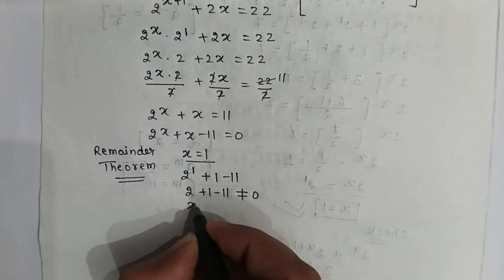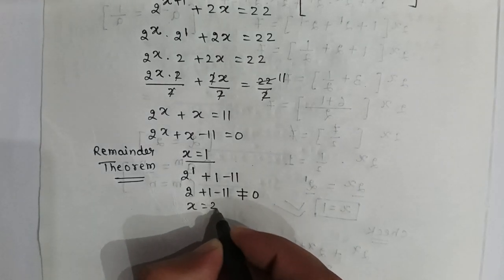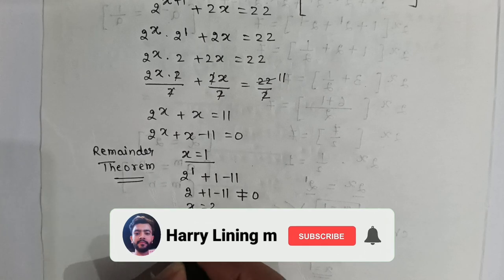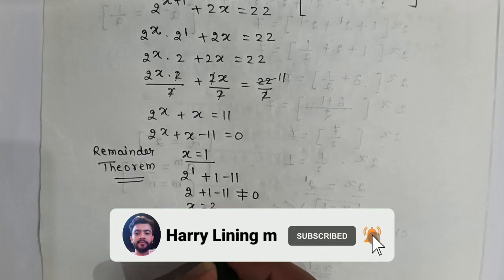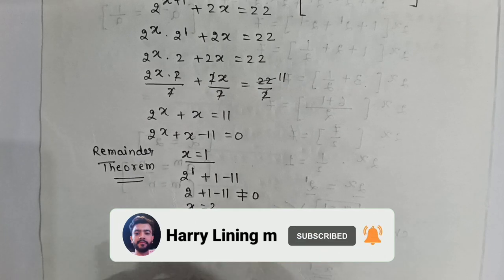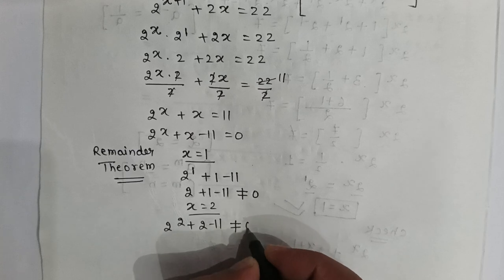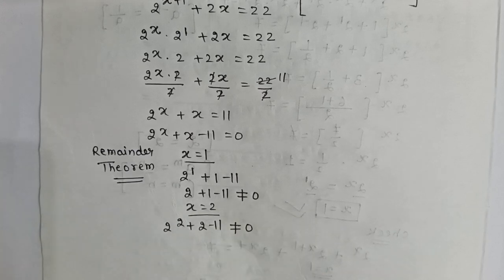If we put x equal to 2, then it will be 2 to the power 2 plus 2 minus 11, which is 4 plus 2 minus 11. That is not equal to 0.